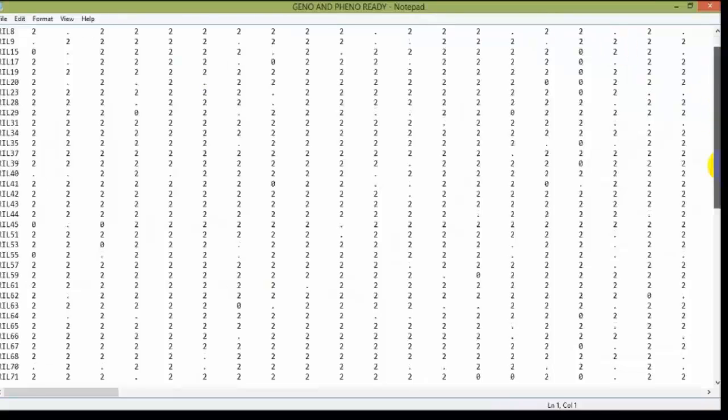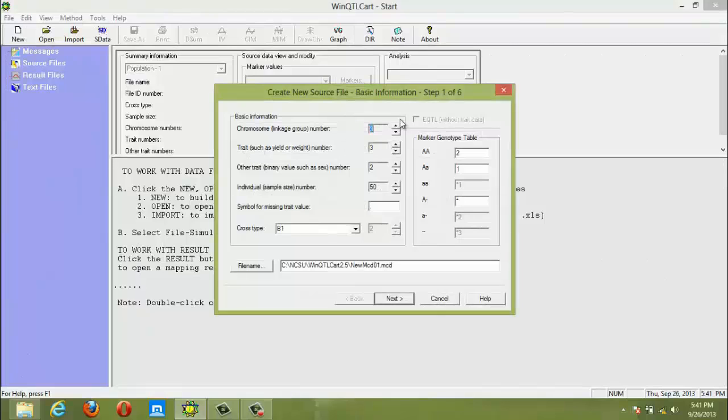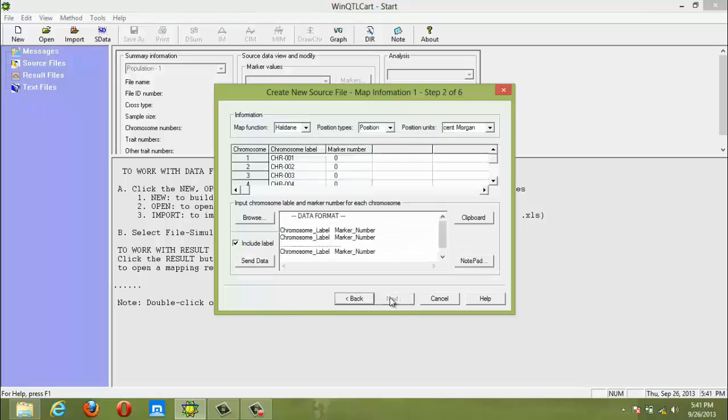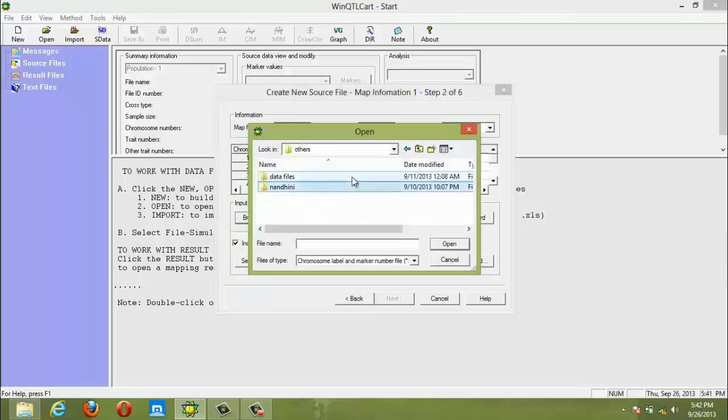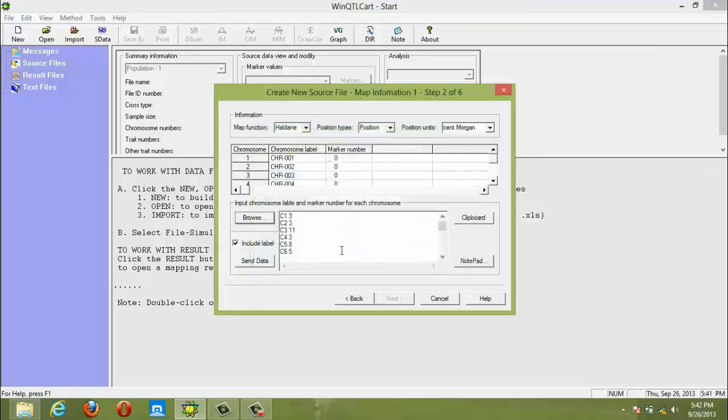This is the notepad view of the geno and pheno data file. Select new option. A basic information box will appear. We have to fill those boxes. Click next. Import the corresponding data file. We have to browse for chromosome label and number of markers. Click send data.